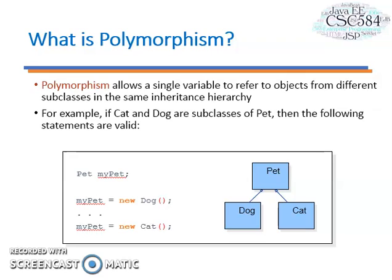First of all, what is polymorphism? Polymorphism is the ability of an object to take on many forms. The most common use of polymorphism in OOP occurs when a parent class reference is used to refer to a child class object. Any Java object that can pass more than one is-a test is considered to be polymorphic.